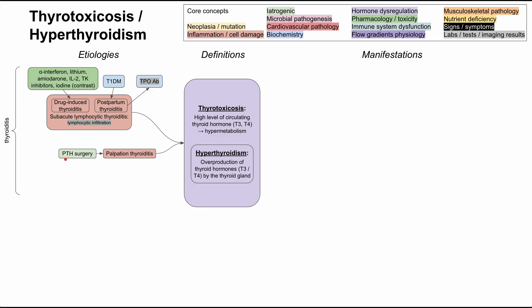The next two are iatrogenic causes of thyroiditis. Palpation thyroiditis happens after somebody gets surgery on their parathyroid glands — if the surgeon is manipulating the parathyroid glands and pressing on the thyroid while inside the neck, it can cause palpation thyroiditis and a resulting thyrotoxicosis. The other is from external beam radiotherapy or radioactive iodine ablation, either of which can cause radiation thyroiditis. External beam radiation therapy can also cause xerostomia, or dry mouth, which may help differentiate it from other types of thyroiditis.